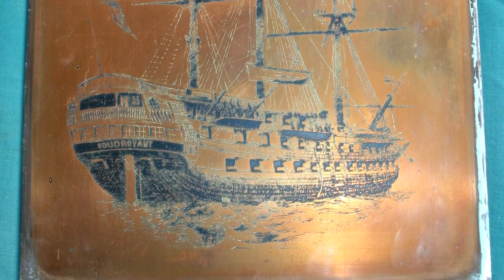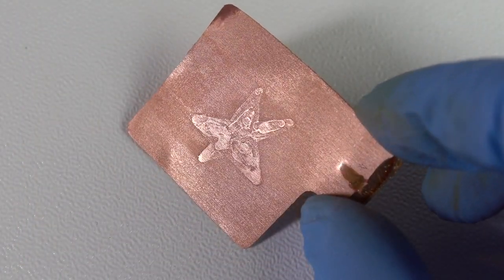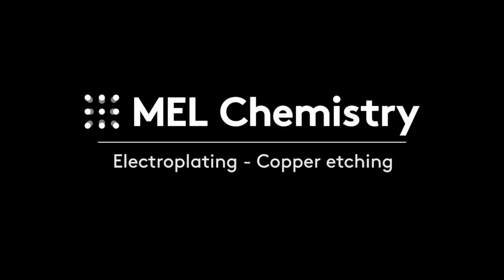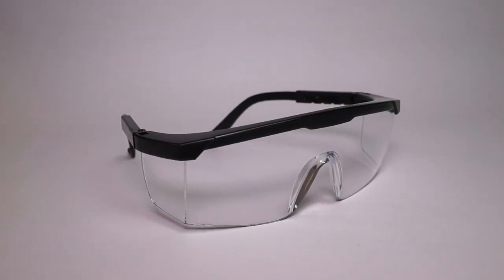You might probably have seen beautiful batch reliefs on the surface of a metal object. With little chemistry knowledge, you can make such patterns by yourselves. Today, with the help of MelScience Electroplating Set, we will paint a copper plate.